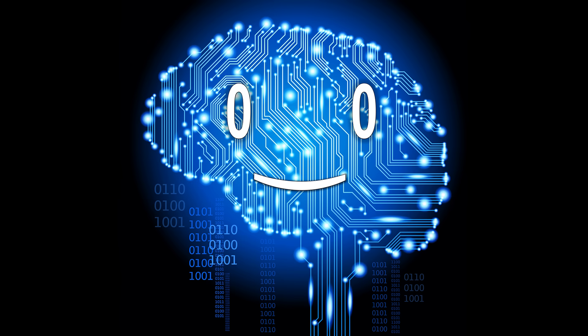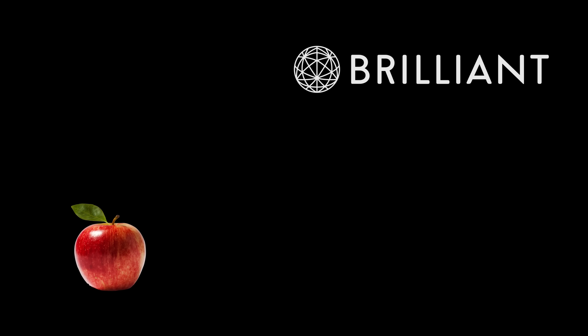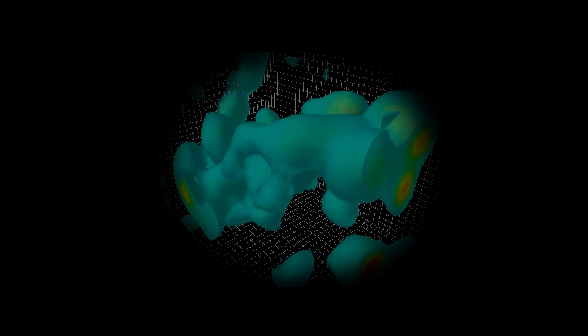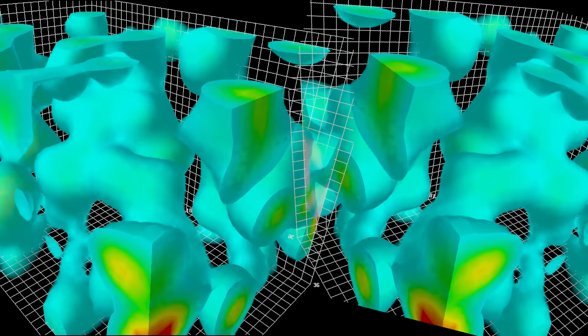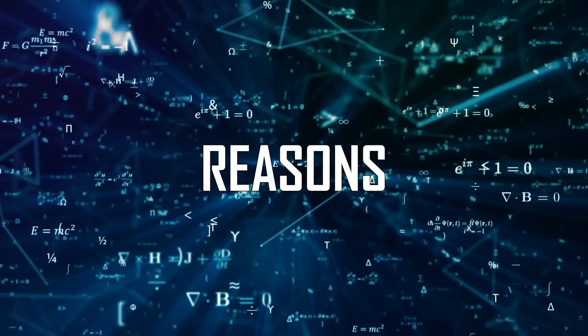For the human construct of time to exist, there would need to be at least two points of reference to compare, like an apple and the logo of today's sponsor, Brilliant. And since nothing was there, nothing existed. Except for possibly virtual particles that exist independent of time. And why is that? Because reasons and complicated physics. No questions.